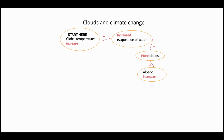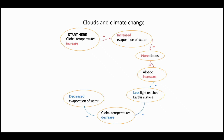Clouds have a higher albedo than most of Earth's surface, so the planet's average albedo increases. We figured out last lesson that higher albedo means less light will reach Earth's surface. If less light reaches Earth's surface, that will cause a decreasing trend in average global temperatures as there is less energy in the Earth's system. But lower temperatures mean that less water will evaporate, so there will be fewer clouds, which means Earth's average albedo will actually decrease.